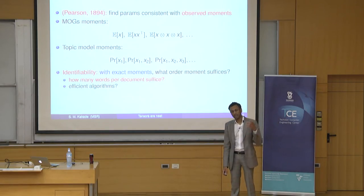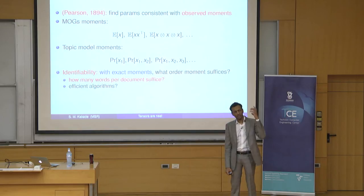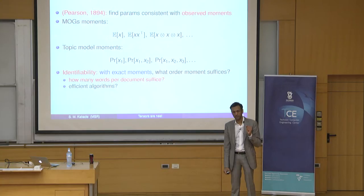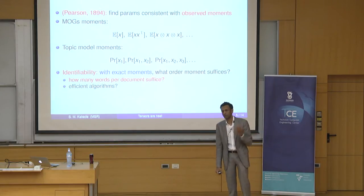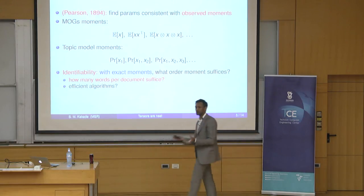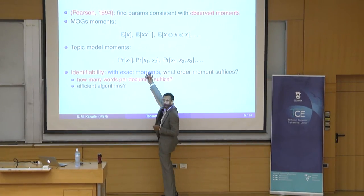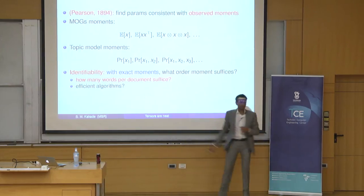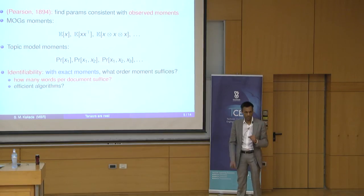For topic models, the moments take a very natural form. The first moment is just the unconditional distribution of words in your document — just the probability of some word. The second moment is specified by the joint probability of two words: what's the chance that 'Riemann' and 'geometry' occur in the same document? And the third moment is specified by the distribution of trigrams — the distribution of three words in your document.